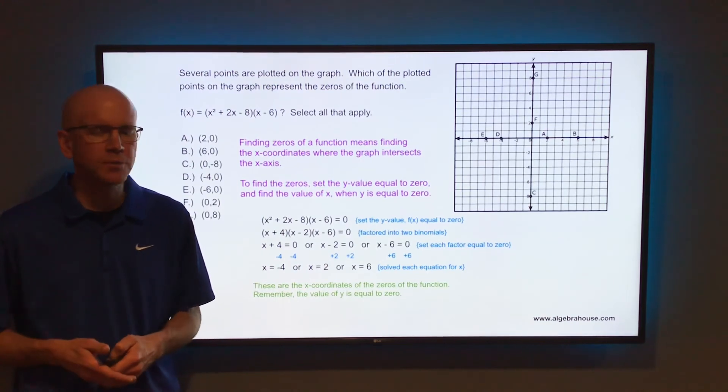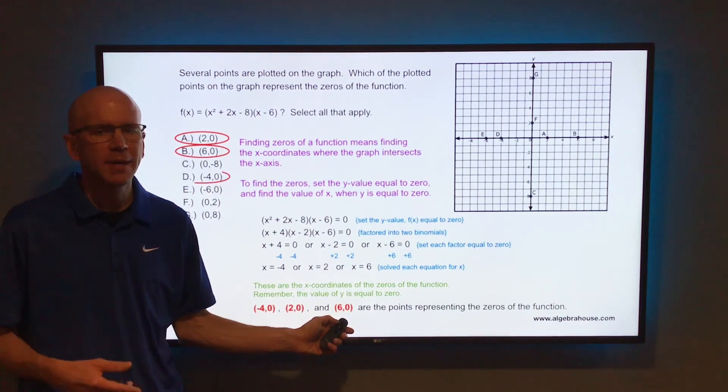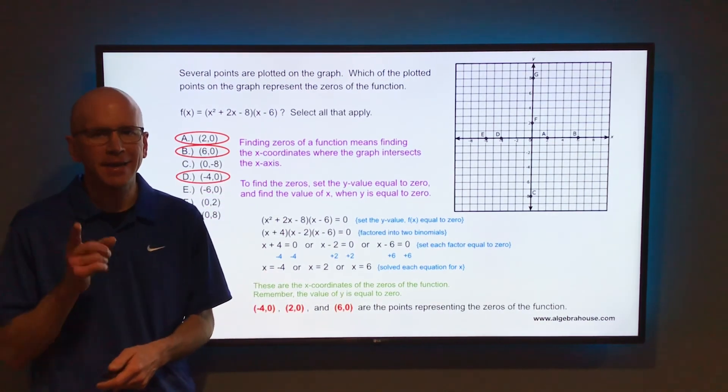The coordinates of those would be (-4, 0), (2, 0), and (6, 0). In this case, letters A, B, and D.